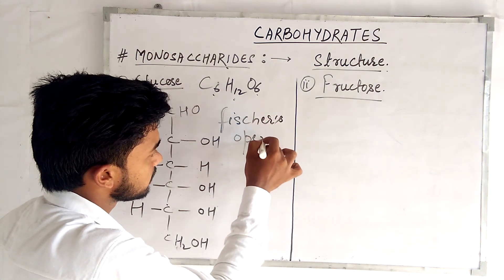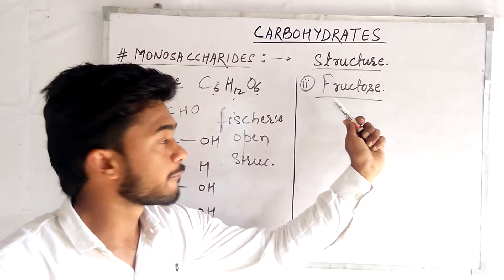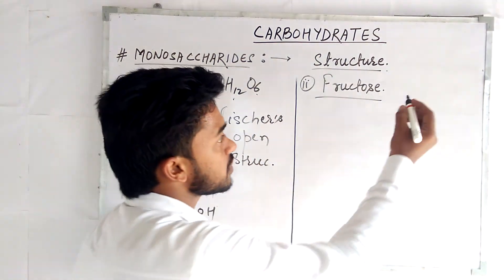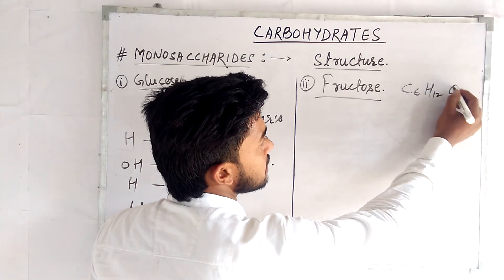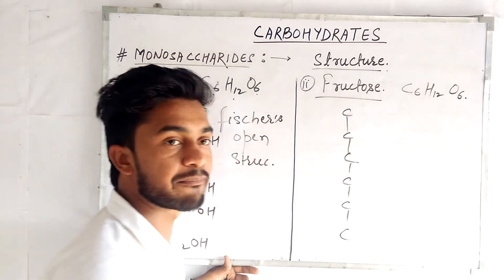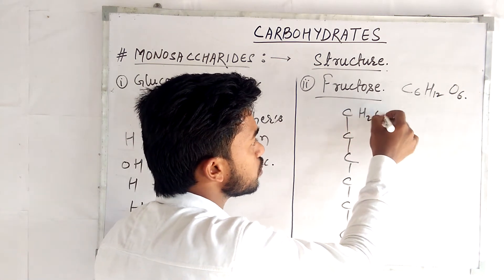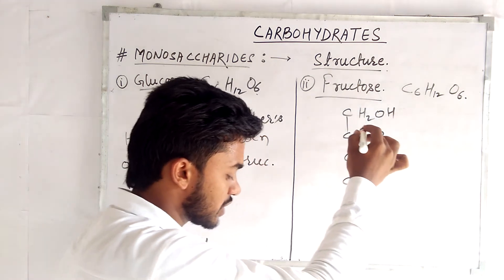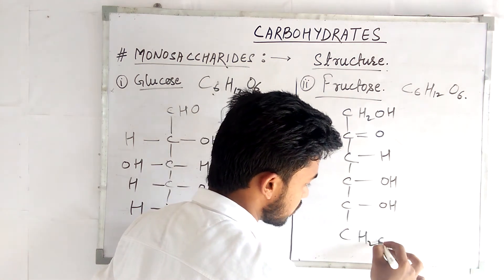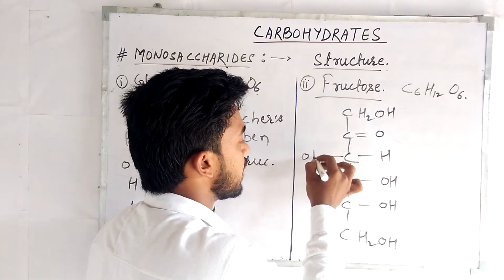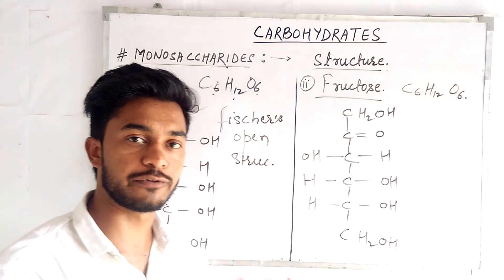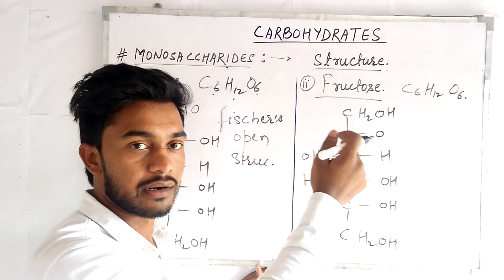Fischer's open structure for fructose: the general formula C6H12O6 is the same for fructose, as glucose and fructose are isomers. Drawing fructose with 6 carbons: carbon 1 is CH2OH, carbon 2 has a double bond with oxygen (ketone group), then hydroxyl groups, and carbon 6 is CH2OH. One important point: carbon number 2 in fructose is sp2 hybridized, while all other carbons are sp3 hybridized. This is the linear chain or Fischer's open projection for fructose.